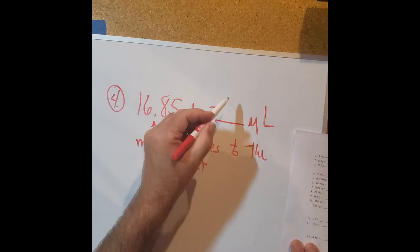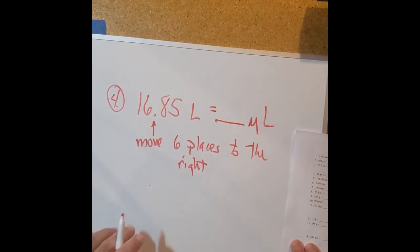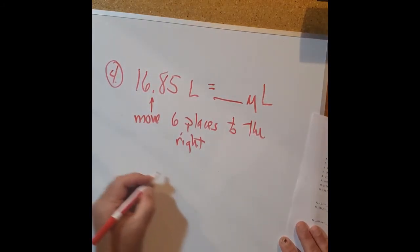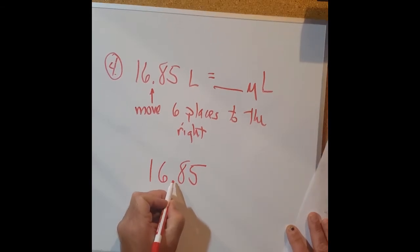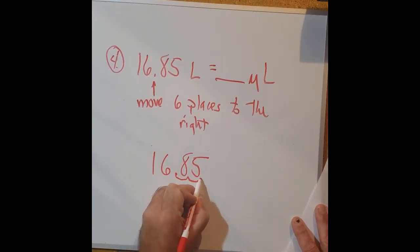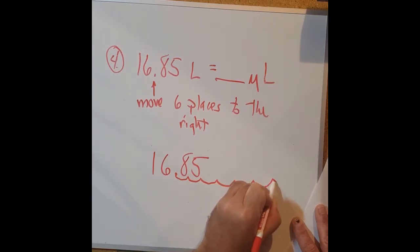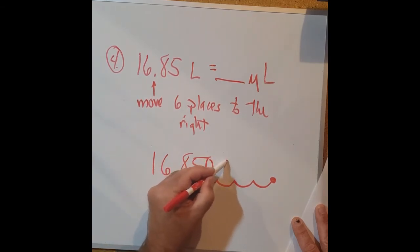And we'll get the answer that belongs right here. So let me just move this down here. 16.85, I'm going to move it six places to the right. So it'll be one, two, three, four, five, six, decimal point, and these empty spaces here get filled up with zeros.